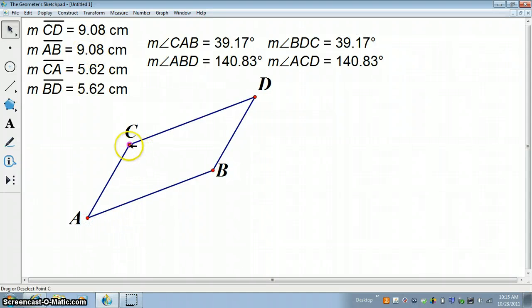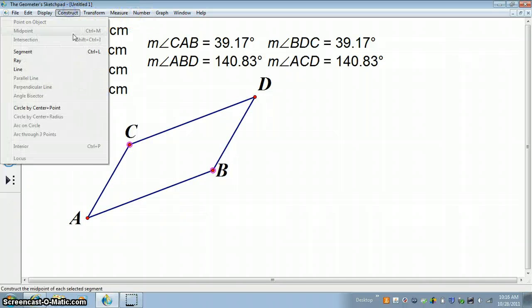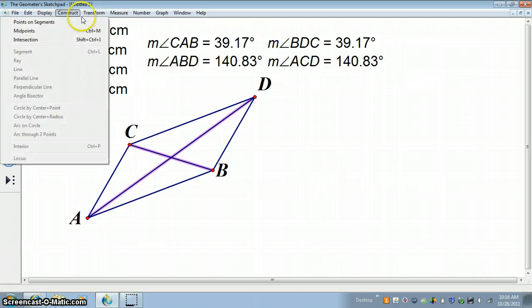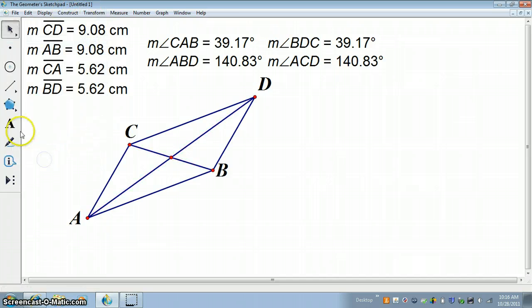Let's take a look at one last property of parallelograms. Let's construct the diagonals here. So there's diagonal BC. And here's diagonal AD. And let me get their point of intersection. And the point of intersection is point E.